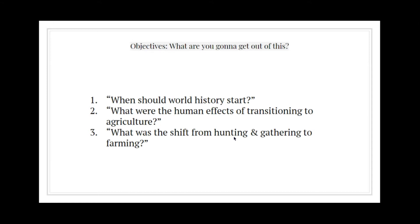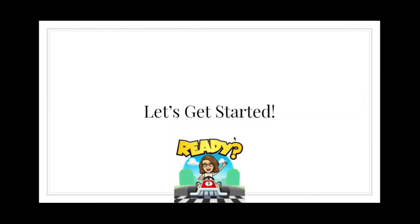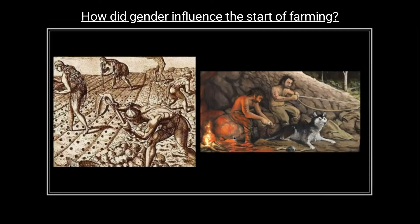We have three main objectives for this video: number one, where should world history start? Number two, what were the human effects of transitioning to agriculture — to farming? And number three, what was the shift from hunting and gathering to farming? Without further ado, we're going to get started with how agriculture was influenced by various gender relations.